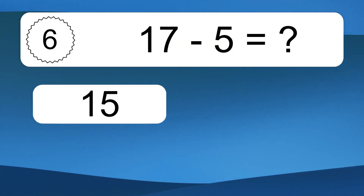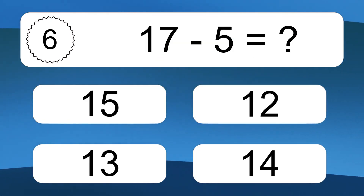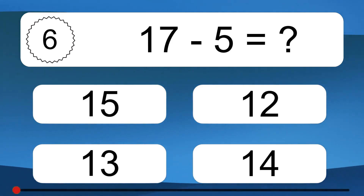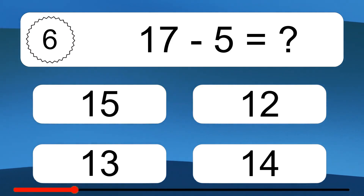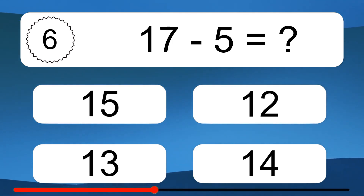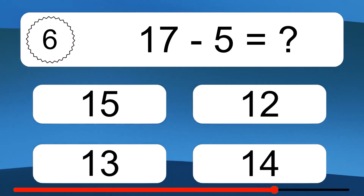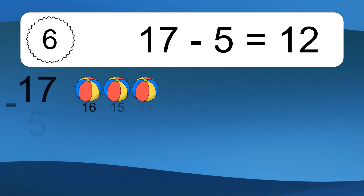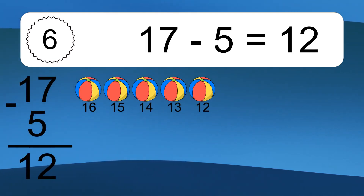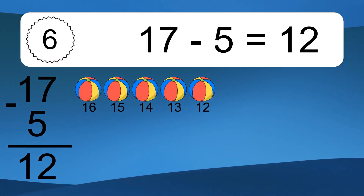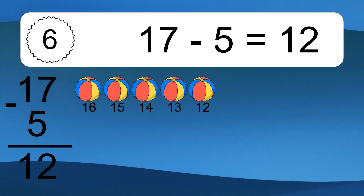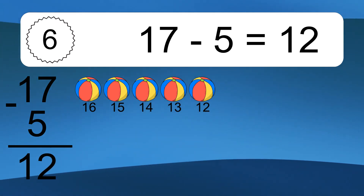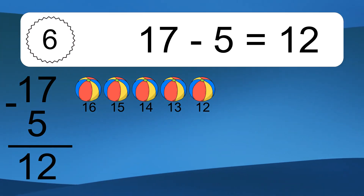17 minus 5 equals what? 17 minus 5 equals 12. Let's count it: 16, 15, 14, 13, 12.